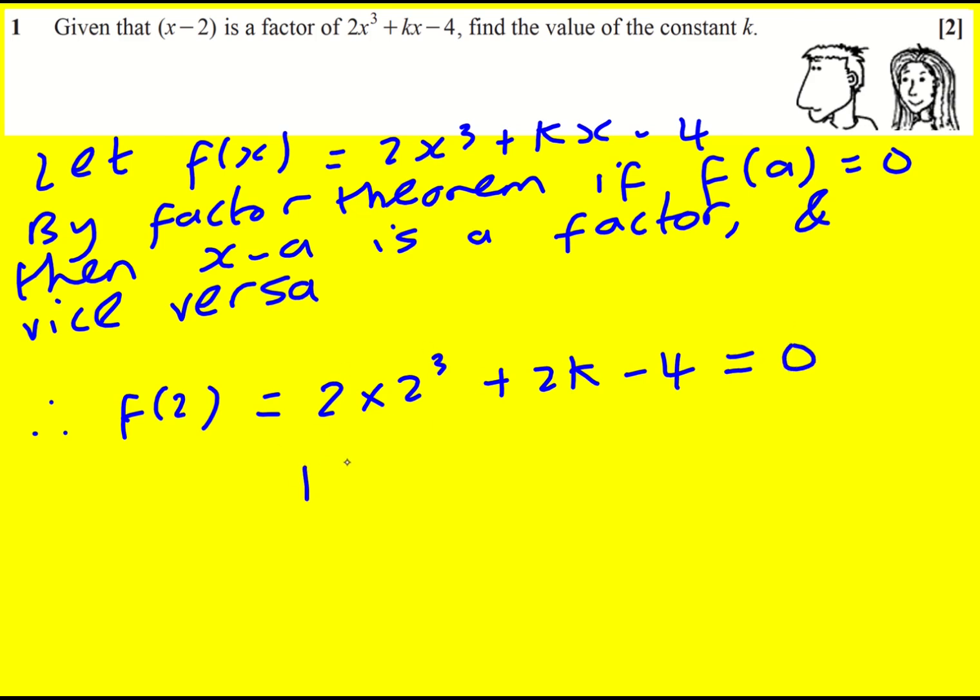And that's going to give me 16 plus 2k minus 4 is equal to 0, which is 12. So 2k is equal to minus 12, k equals minus 6.